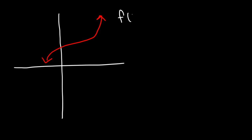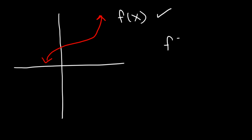Now consider a function f of x. Can we determine if its inverse is a function? We know that if f of x passes the vertical line test, it's a function — it touches it only once, so f of x is a function. There's also something called the horizontal line test. If the graph touches the horizontal line only once, it means the function is one-to-one.